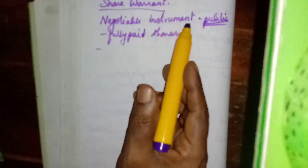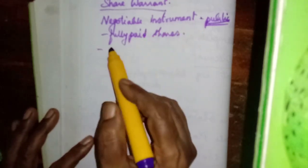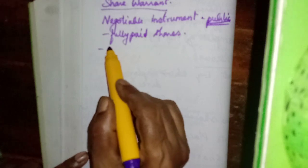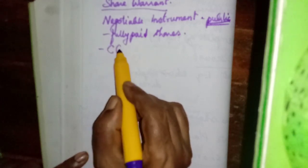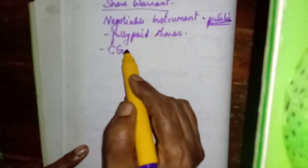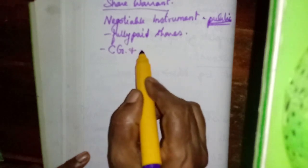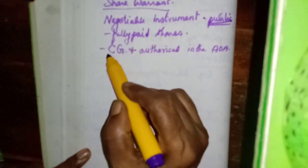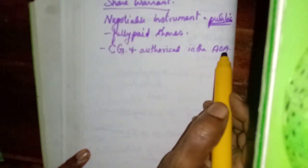A company can issue a share warrant, but there is no compulsion. If a company wishes to issue a share warrant, they must get permission or approval from the central government. Without the central government's approval, a public company cannot issue the share warrant. Additionally, the issue must be authorized in the articles of association of the company.